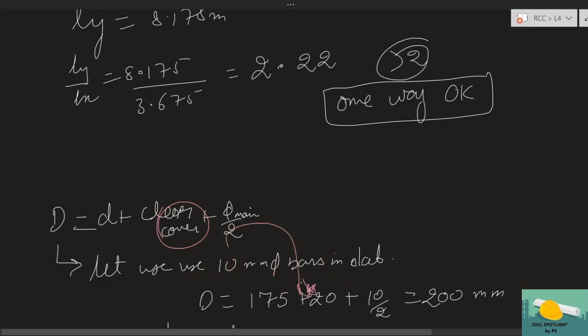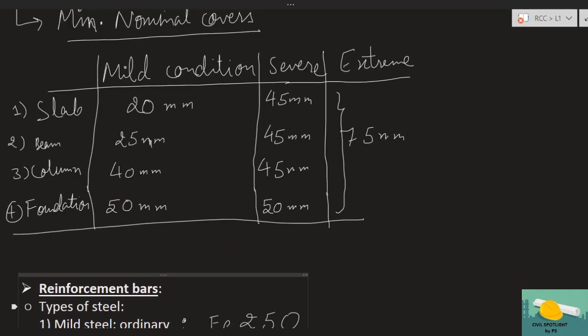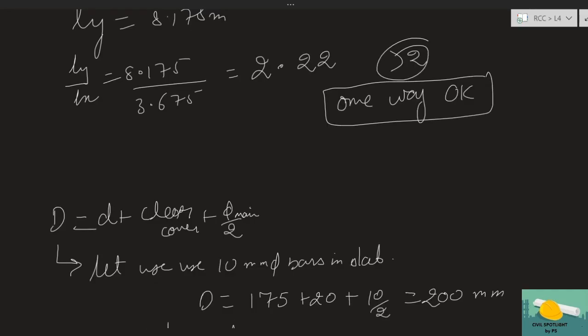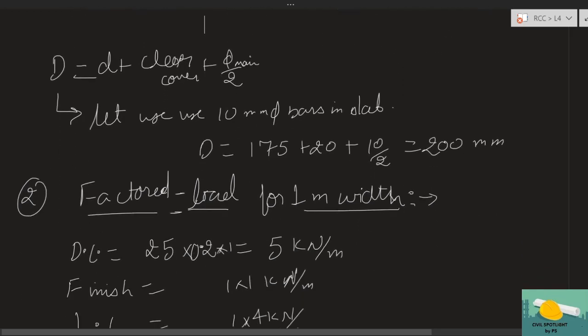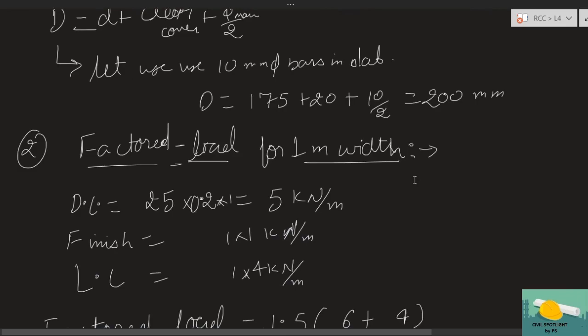Referring to the table we studied — for mild conditions, minimum clear cover is 20 mm. Using 20 mm cover and 10 mm bar diameter, overall depth D = 200 mm. Now let's calculate loads for one meter width, i.e., design for a 1000 mm strip.